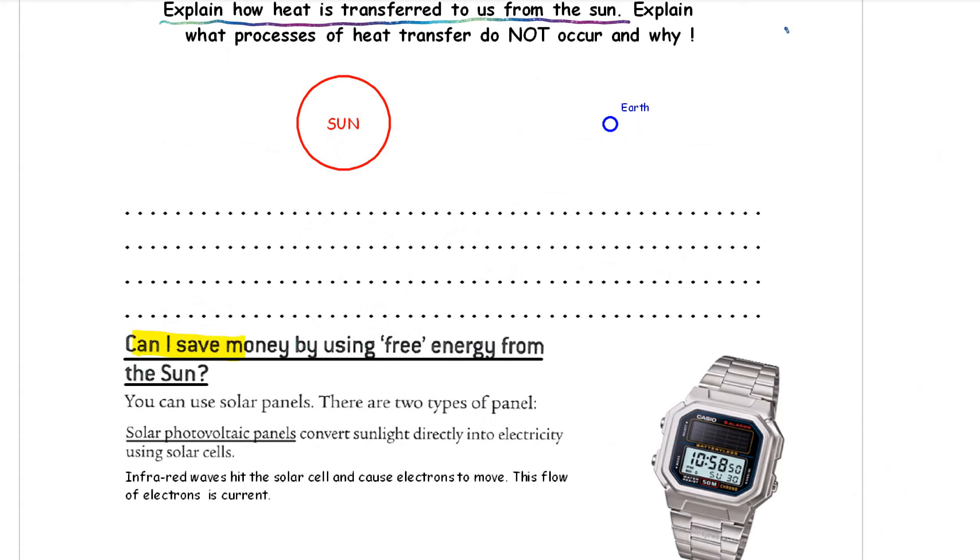Right. Can I save money by using free energy from the sun? You certainly can. And you can use solar panels. There are two types of panel. The first one is a solar photovoltaic cell. It's called a solar cell. A solar PV cell. Photovoltaic.